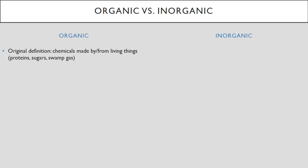The original definition of an organic chemical was pretty organic: chemicals made by or from living things like proteins or sugars or the swamp gas that you can capture and burn from a swamp, obviously made by the living things in the swamp. The original definition of inorganic was chemicals obtained from non-living things, sea salt or minerals that you can get from rocks or carbon dioxide and other gases you can pull from the air.